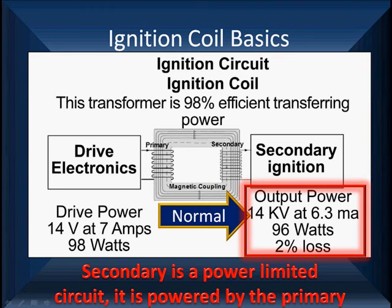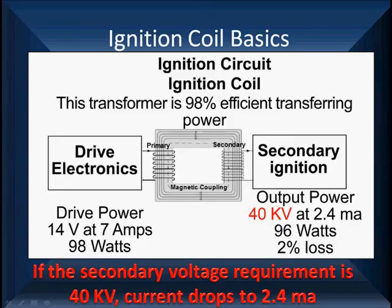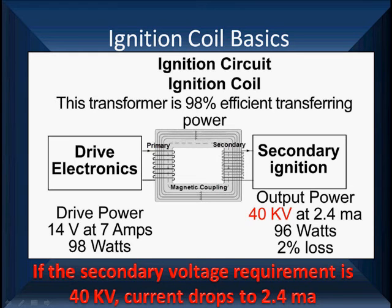The secondary is powered by the primary — if something goes wrong, it's a problem. The voltage in the secondary also controls current flow. If we have resistance in the secondary where the voltage requirement is way high, like 40 kV, we're still power-limited and current will drop to 2.4 milliamps. That's what we mean by a power-limited circuit: as the voltage increases, we have less current flow and a weak spark.